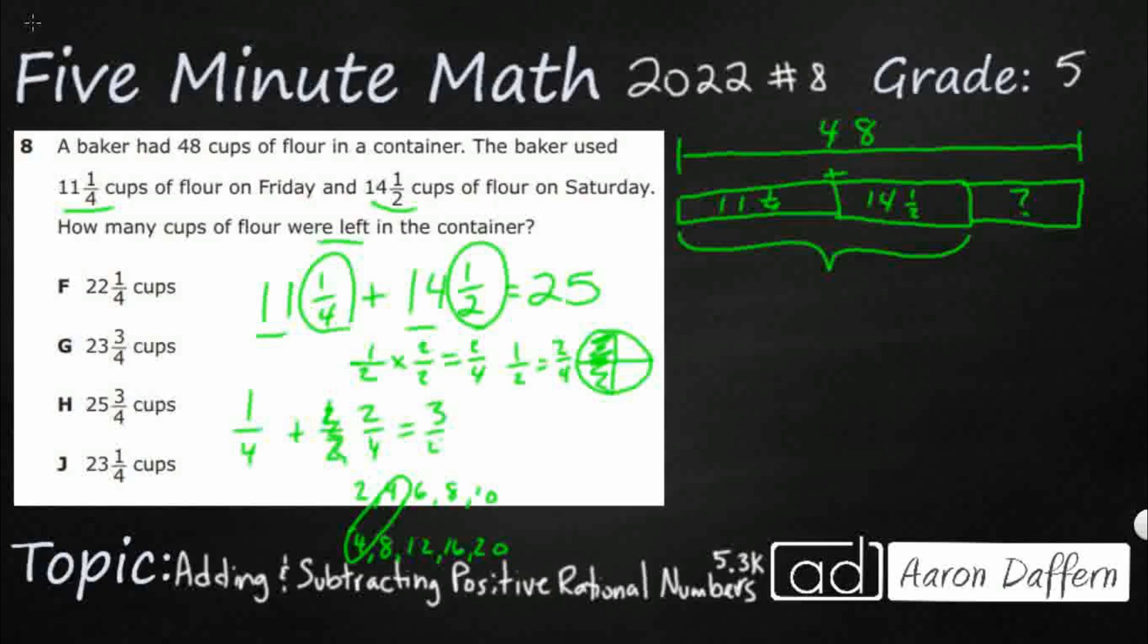So ¼ and 2/4, that's good, makes 3/4. So I've got 25¾. 25¾, which is one of our answers. Let's not get hasty. It's not H, because I need to see how much is left. I'm looking for this right here.